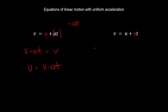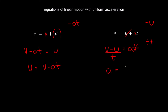Same formula, different perspective — now I want to find a. Starting with v equals u plus at, I need to get rid of the plus u, so I subtract u from both sides: v minus u equals at. Then a times t — the opposite of multiply is divide — so I divide both sides by t, giving a equals v minus u divided by t. That's acceleration in terms of final velocity, initial velocity, and time.